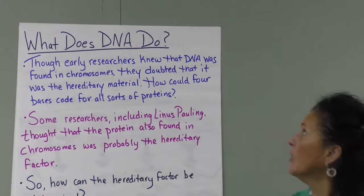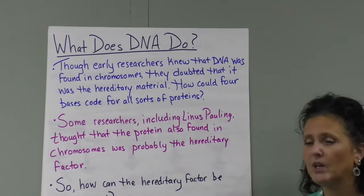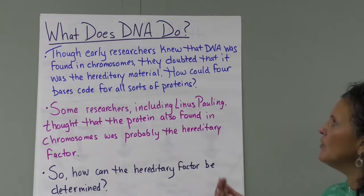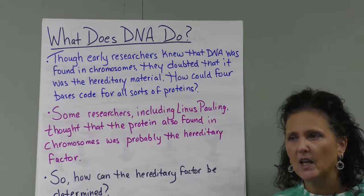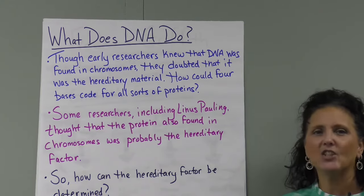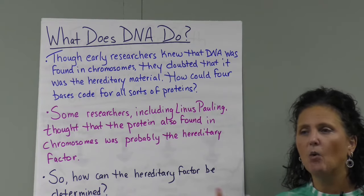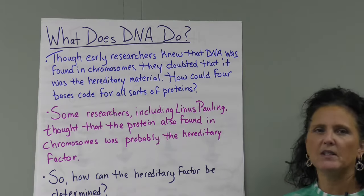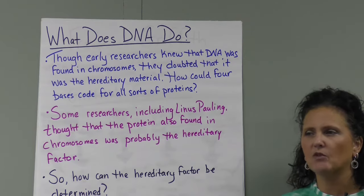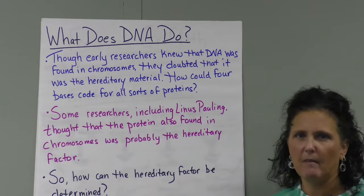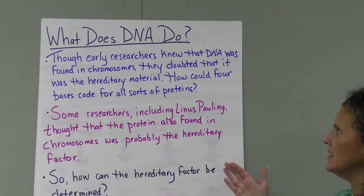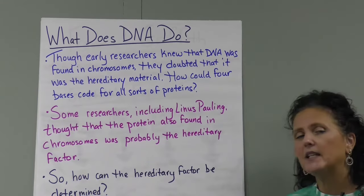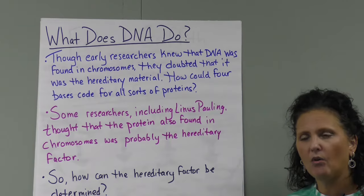So what does DNA do? Researchers in the early times, maybe in the early 1920s, knew that DNA was found in chromosomes. Chromosomes are discrete packaging units of DNA in your cells. We have 23 pairs of chromosomes, but different species have different amounts — a banana has more or fewer chromosomes than a strawberry. But they didn't think that DNA was the hereditary material. They knew it existed, but they didn't think it carried your genetic code.